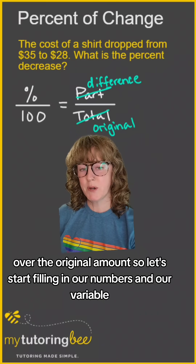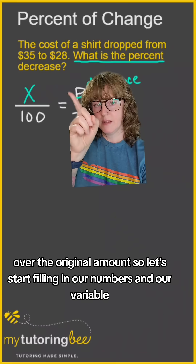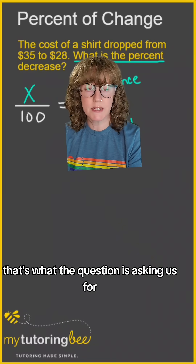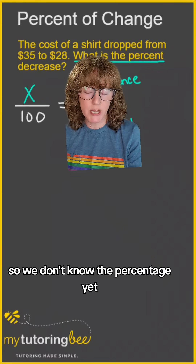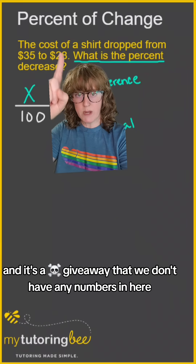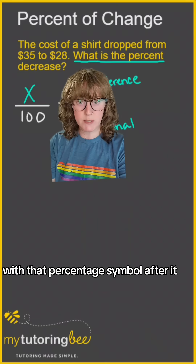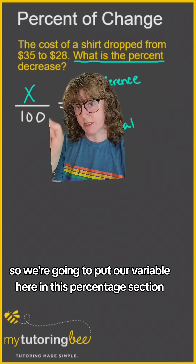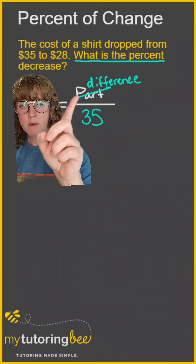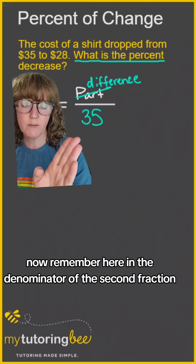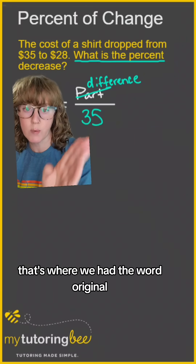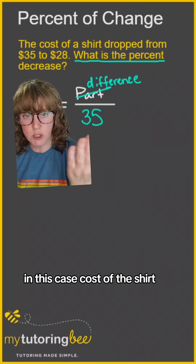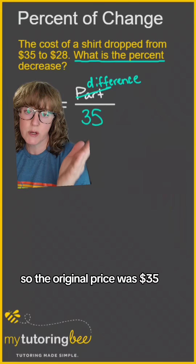Let's start filling in our numbers and our variable, beginning with the percentage. That's what the question is asking for, so we don't know it yet — and it's a dead giveaway that there are no numbers with a percent symbol given. So we put our variable in the percentage section. In the denominator of the second fraction we have the original amount, which is the original cost of the shirt — $35.